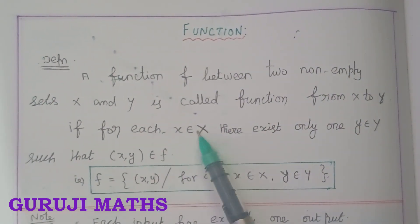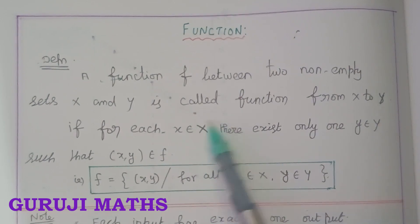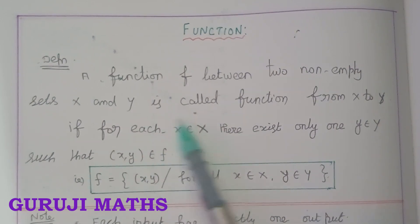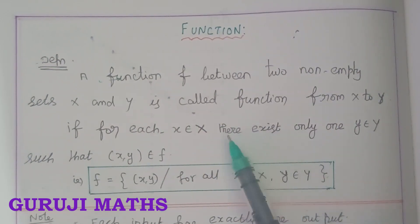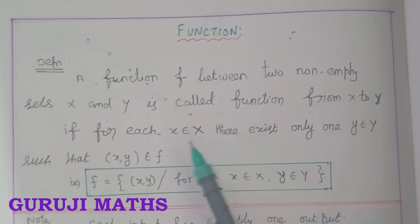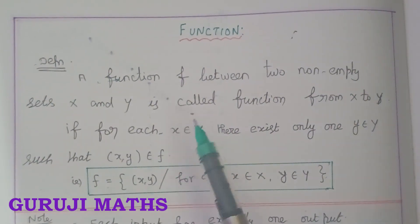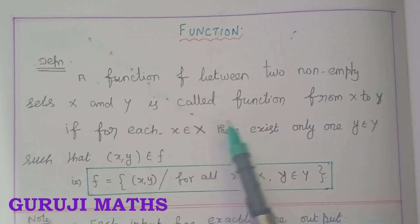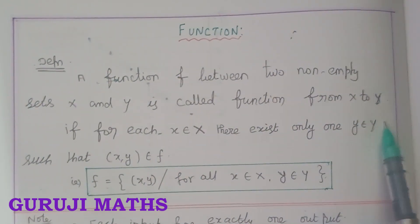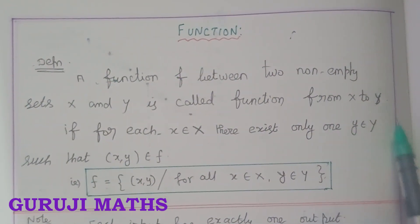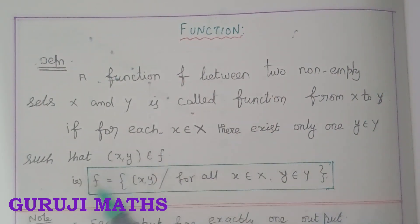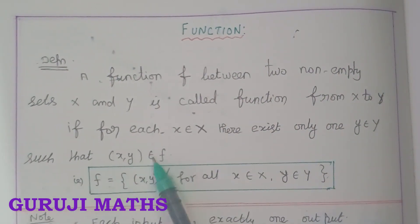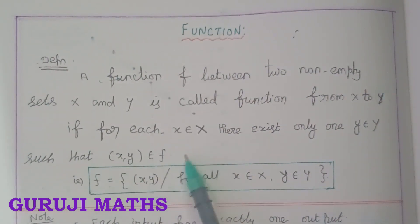For each x belonging to X, x is mapped to only one y. This function is related to y, such that (x, y) belongs to f.